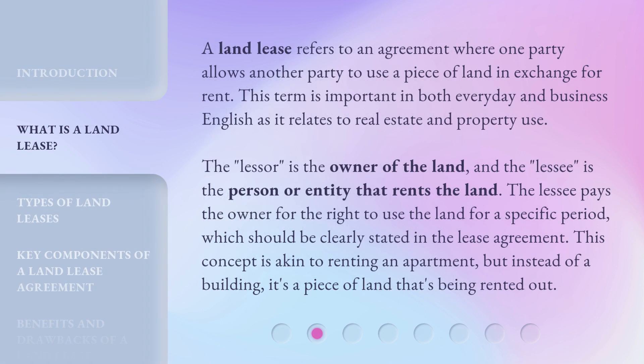A land lease refers to an agreement where one party allows another party to use a piece of land in exchange for rent. This term is important in both everyday and business English as it relates to real estate and property use. The lessor is the owner of the land, and the lessee is the person or entity that rents the land. The lessee pays the owner for the right to use the land for a specific period, which should be clearly stated in the lease agreement. This concept is akin to renting an apartment, but instead of a building, it's a piece of land that's being rented out.